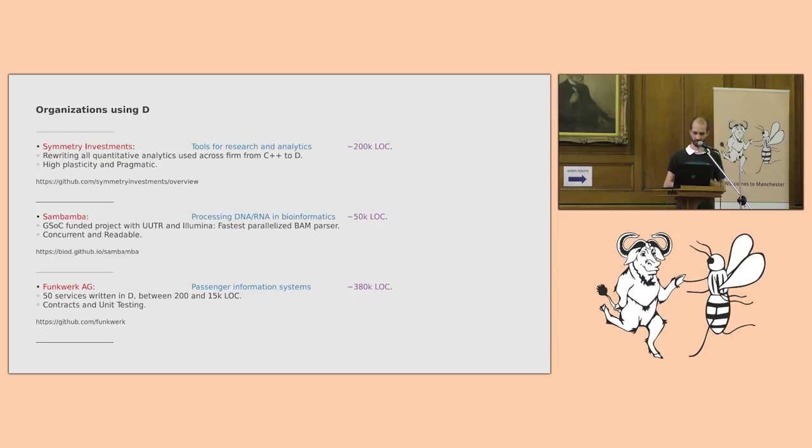So who's using D? Symmetry Investments is a financial company. They have a reporting language named SIL that's using PEGD. PEGD is a parsing expression grammar library which generates code at compile time. They're currently in the midst of rewriting all their C++ code base into D.